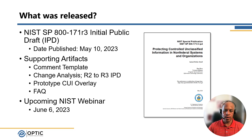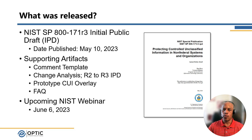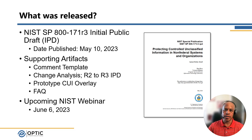The companion artifacts include a comments matrix to ingest any comments submitted from the community, a change analysis worksheet which shows the deltas between Revision 3 and this new public draft, a prototype CUI overlay which shows the tailoring from the 853 Revision 5 baseline moderate controls to the new draft 171, an FAQ providing frequently asked questions from the community, and a listing of an upcoming webinar that NIST will hold June 6th providing an overview of recent changes to this public draft.